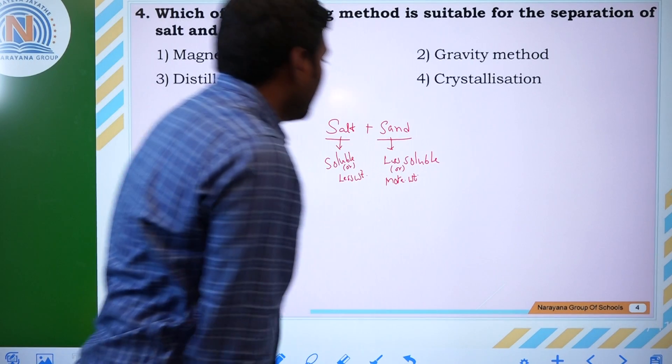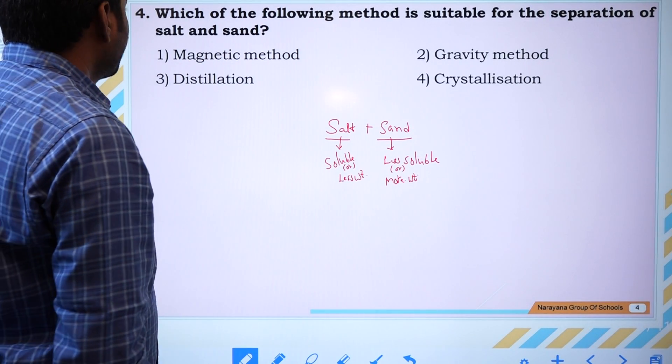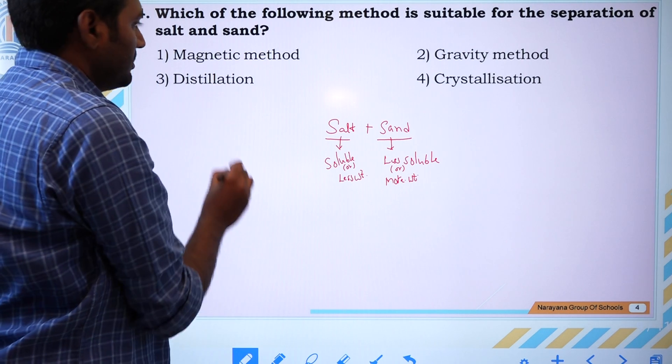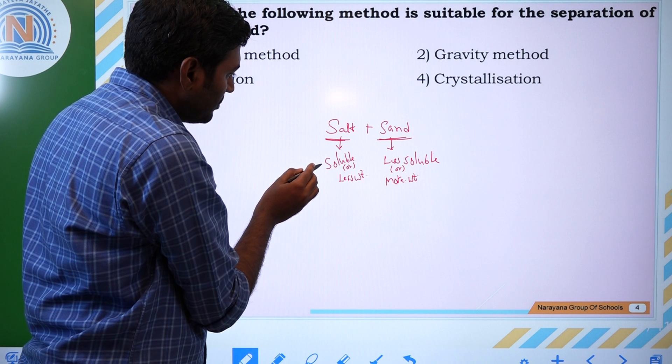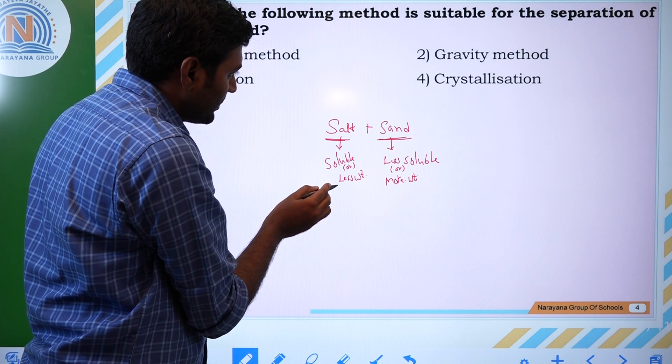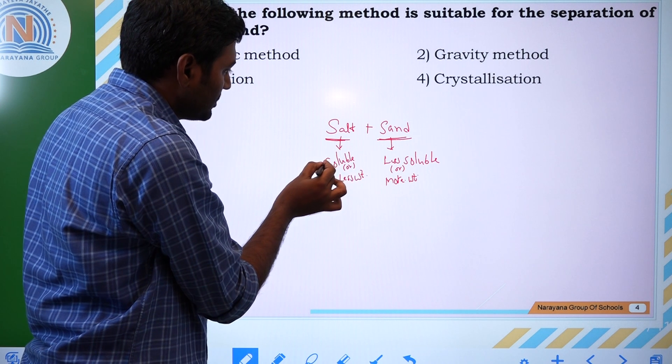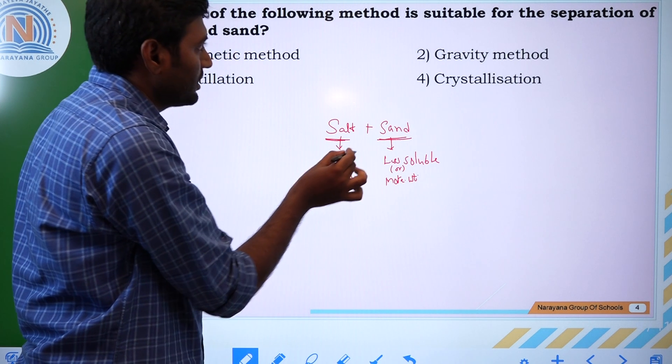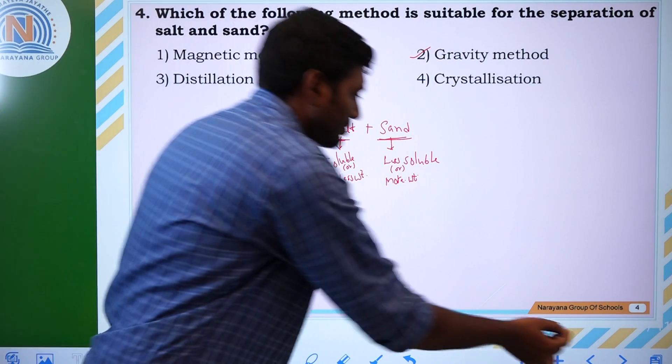Next question: which of the following method is suitable for separation of salt and sand? If you take salt and sand, salt is soluble while sand is insoluble or has different weight. Based on the solubility and weight, we can select the gravity method.